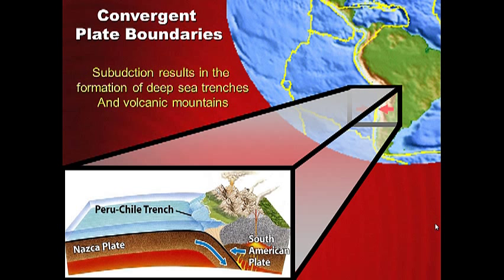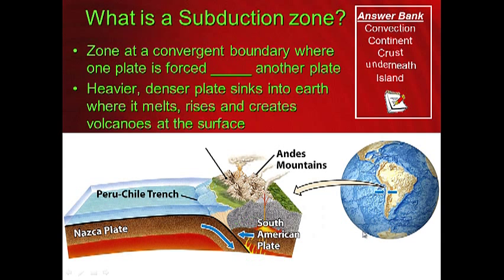Subduction results in the formation of deep sea trenches. Above a subduction zone, we get volcanoes and volcanic mountains, because as one plate is forced underneath the other, it gets very hot from friction. As it goes back into the Earth it melts, and like a lava lamp, that hot magma rises to the surface and forms volcanoes over millions of years. For your notes: what is a subduction zone? Use the answer bank. Go ahead and pause this while you write.